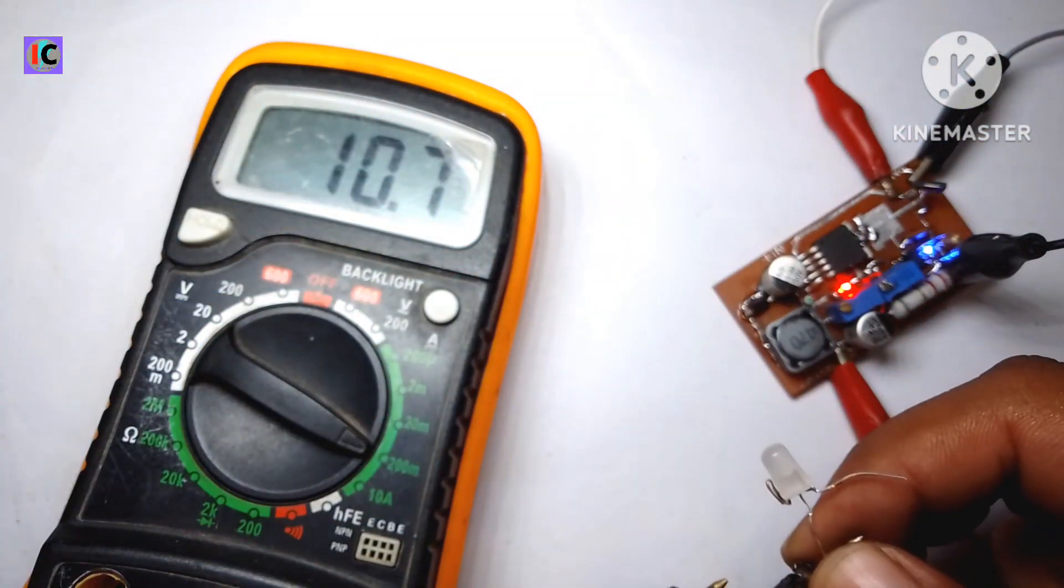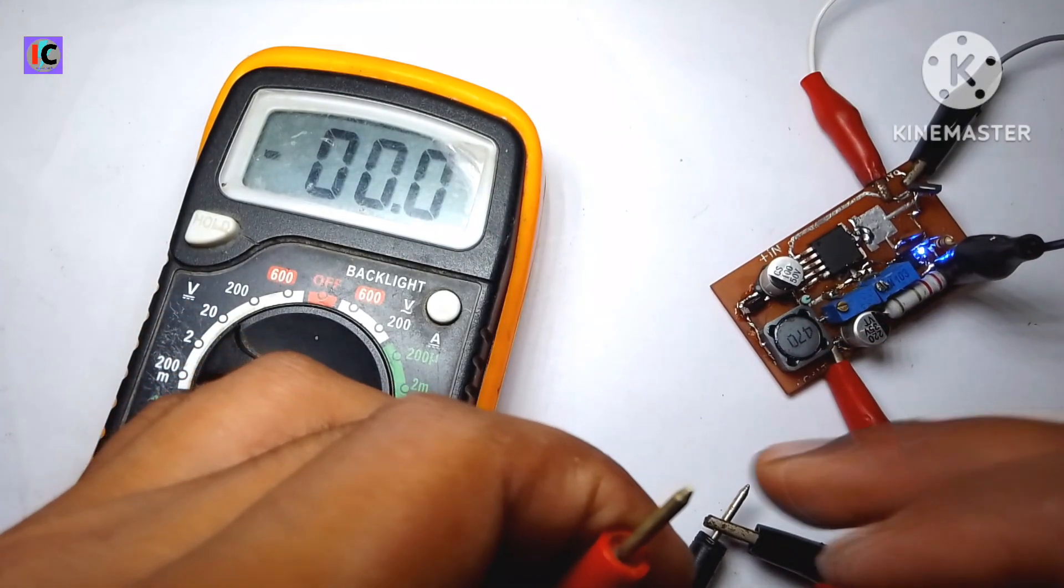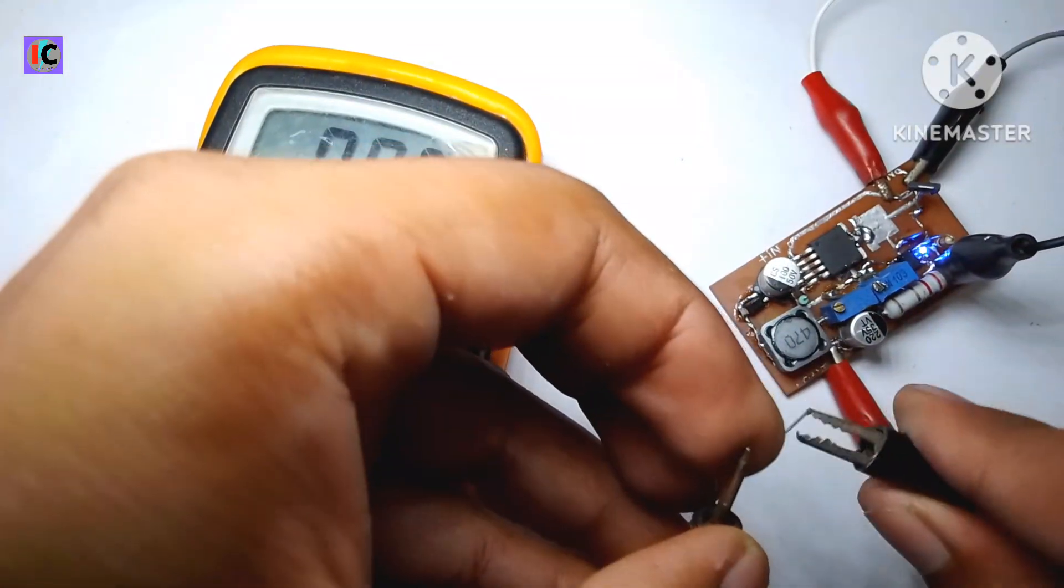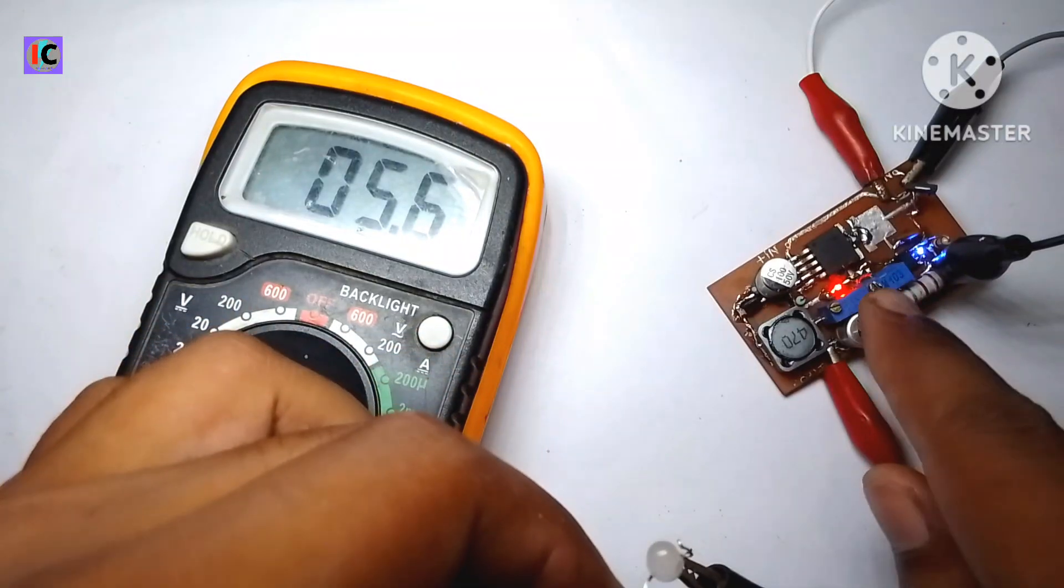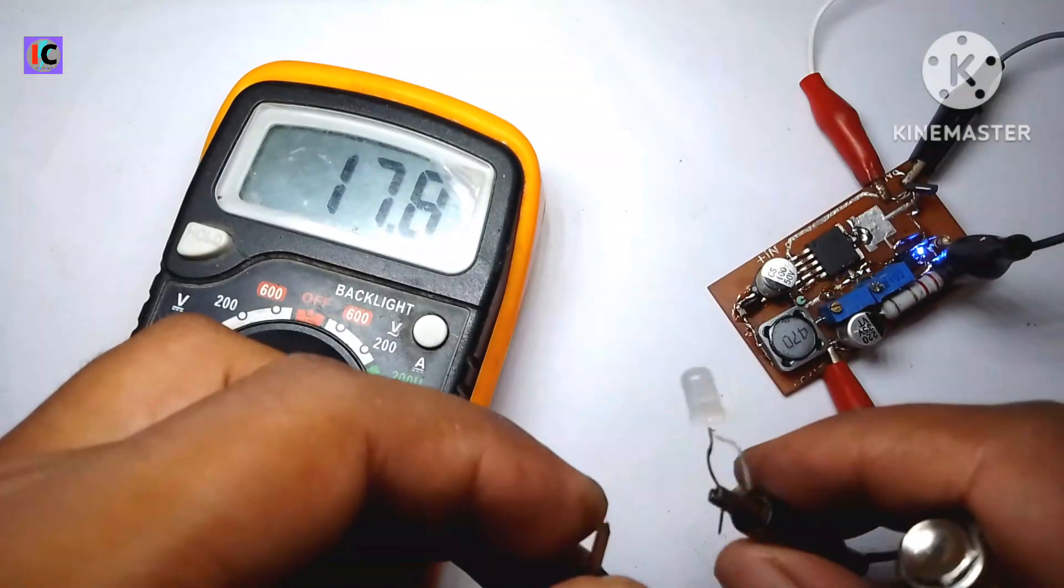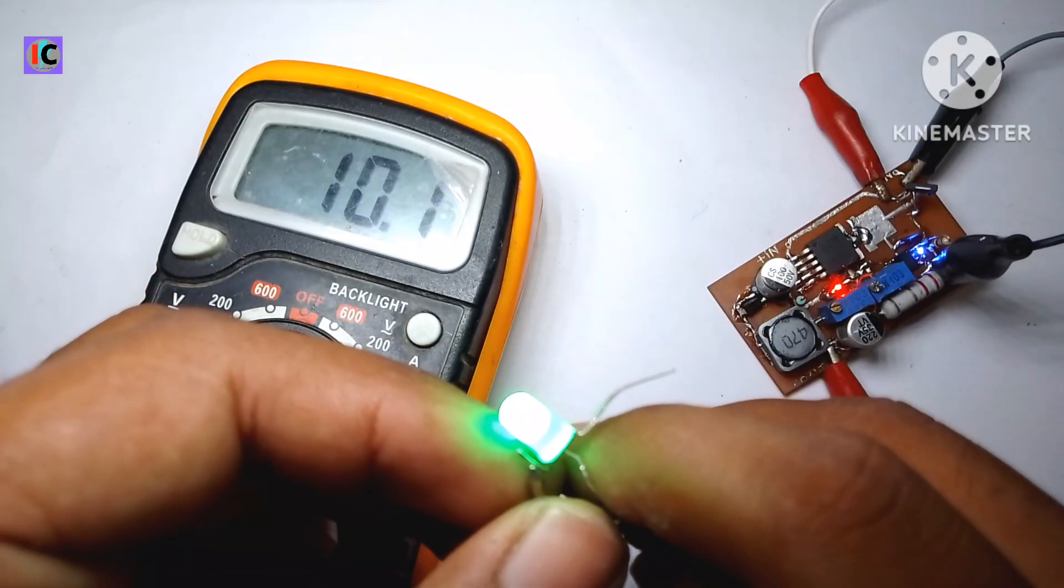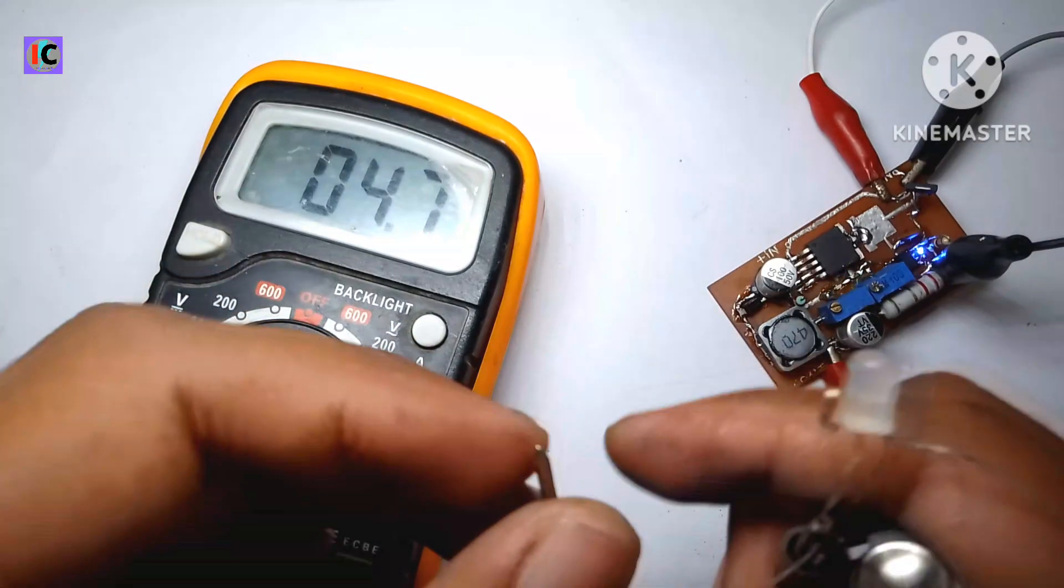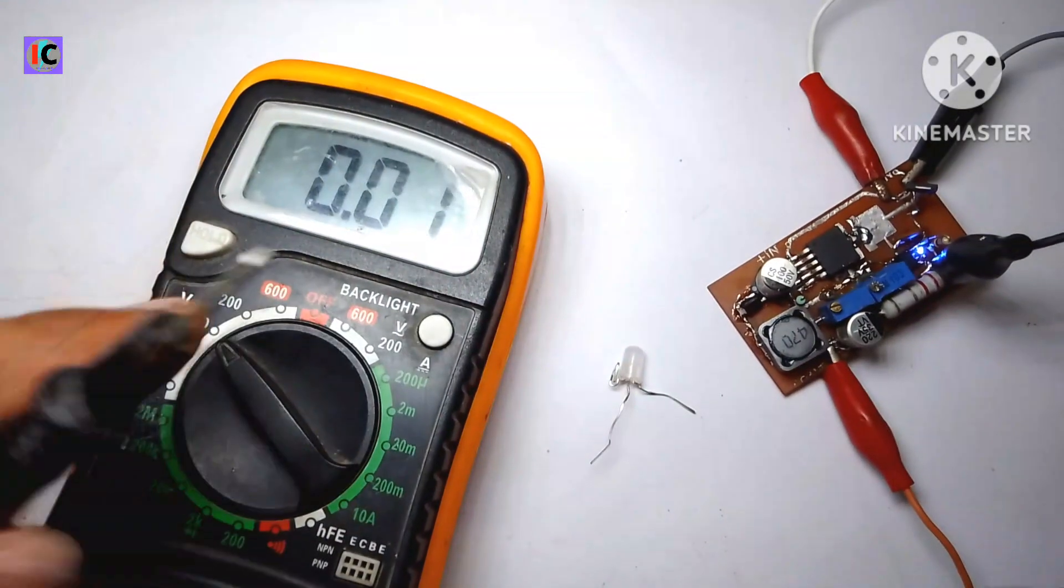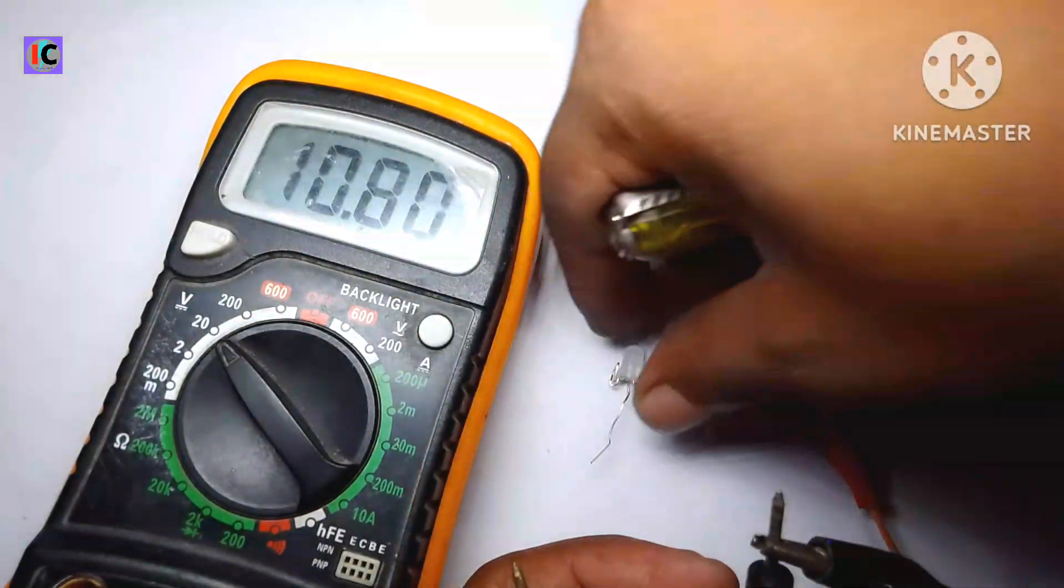Now I have the output current limited to 10.8 milliampere and I'm going to test this LED. The output voltage is almost 10-point-something volts but the current limit is set at 10 milliampere. Here you can see this is a dual LED - red and green in a single LED. But the red LED became damaged as the current is quite high for this, but the green LED is working very perfectly as the current demand for the green LED is a bit higher compared to the red LED. You can see the voltage is 10.8 volts but the current is limited to 10 milliampere.